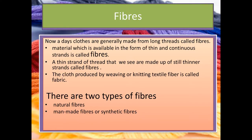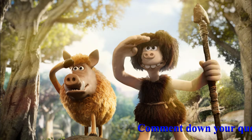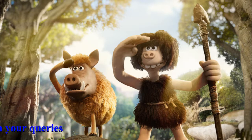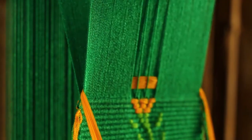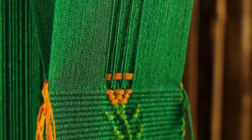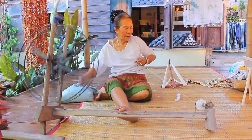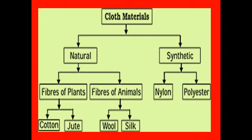Nowadays clothes are generally made up from long threads called fibers. Materials which are available in the form of thin and continuous strands are called fibers. Fibers can be divided into two categories mainly: natural fibers and manmade or synthetic fibers.